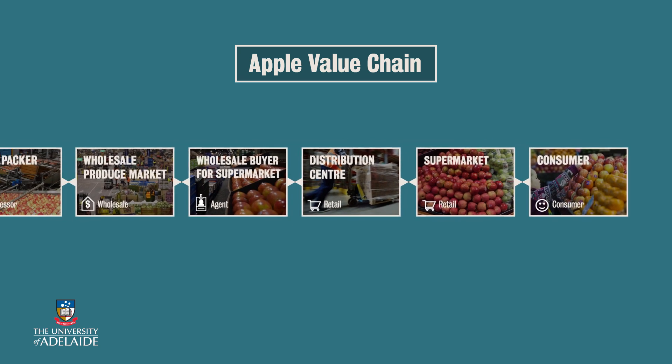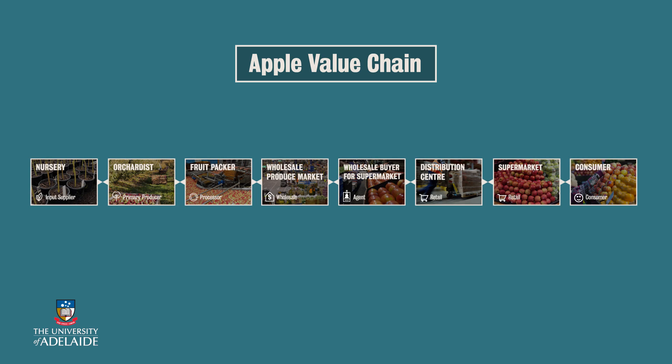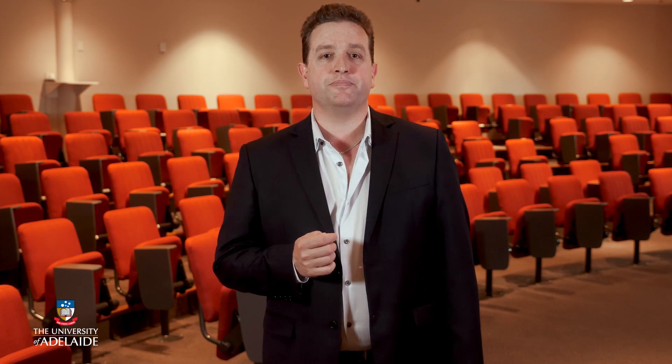In the case of these fresh apples, there is minimal processing or transformation of the product, which keeps the value chain simple. Because the apples are grown locally, the chain is also short. While we are lucky to have locally grown apples here in Adelaide, you may not have access to fresh locally grown apples. Your apples may be imported or travel long distances and exchange ownership several times before landing in your local market. Fresh apple value chains can also be long, despite remaining relatively unprocessed.